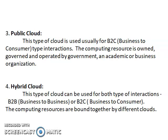The third one is the public cloud. This type of cloud is usually for business-to-consumer type interactions. The computing resources are owned and operated by government, academic, or business organizations. This is public — anyone can access it. The last one is the hybrid cloud. This type of cloud can be used for both types of interactions — business-to-business or business-to-consumer. The computing resources are bound together by different clouds.